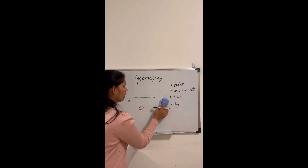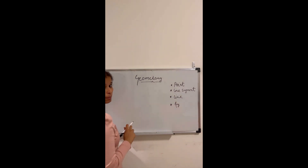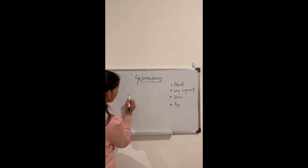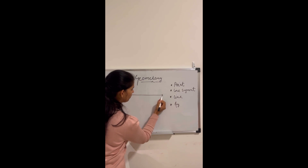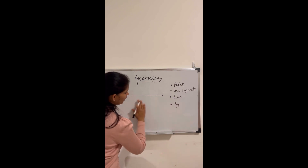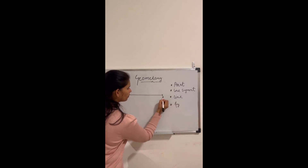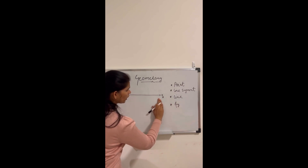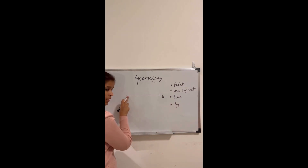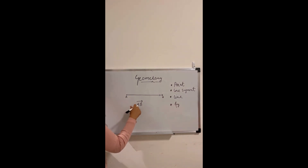Next is a ray. A ray is a straight line that has a start point but not an end point. Suppose I start a line from here — I don't know where it will go, so I keep an arrow like this. It has a start point but no end point, going in a particular direction. I name this point A and this point B, and we write it as ray AB.